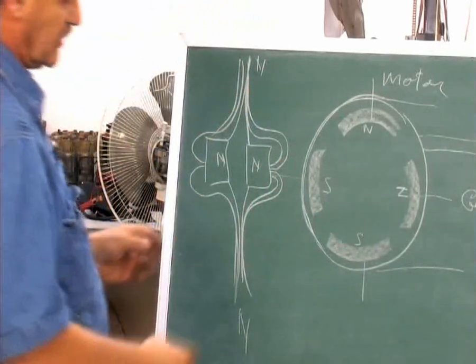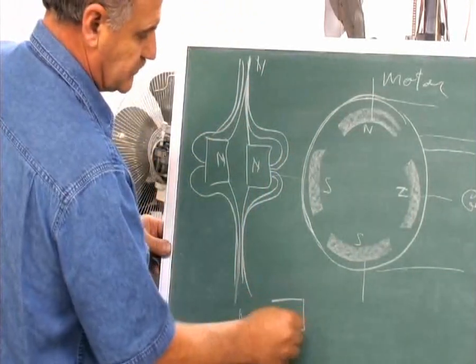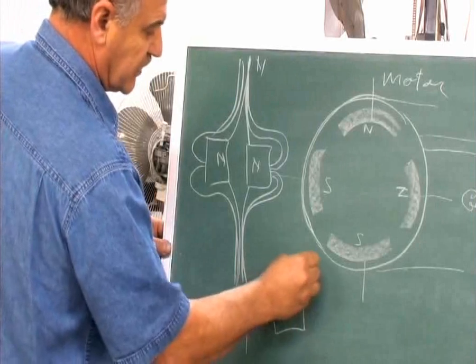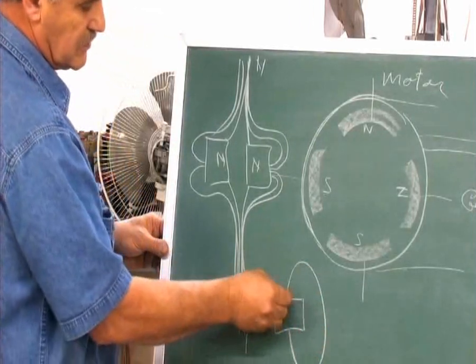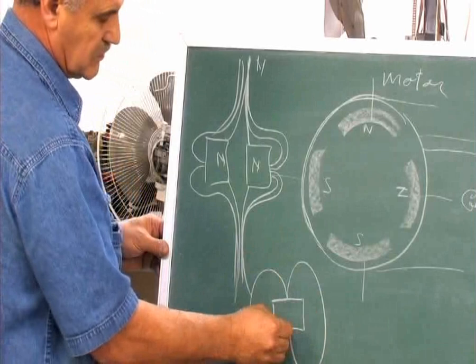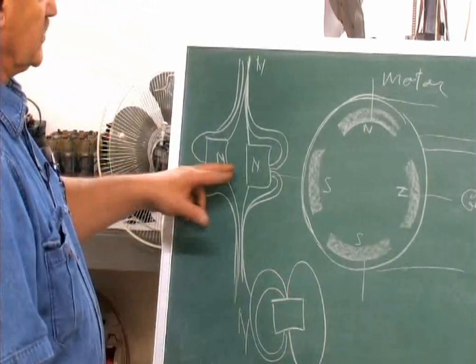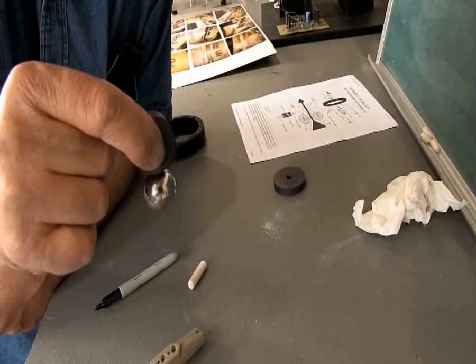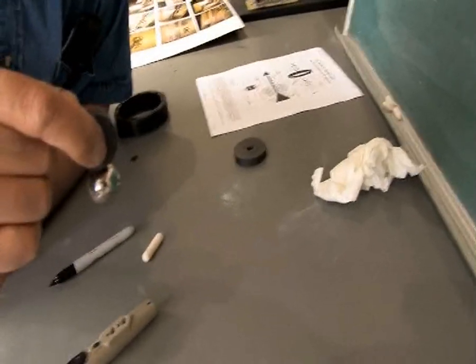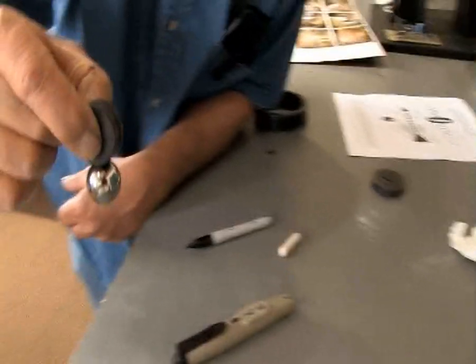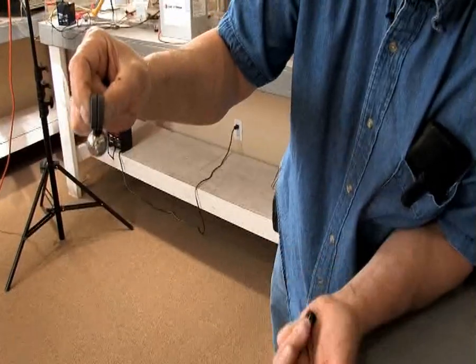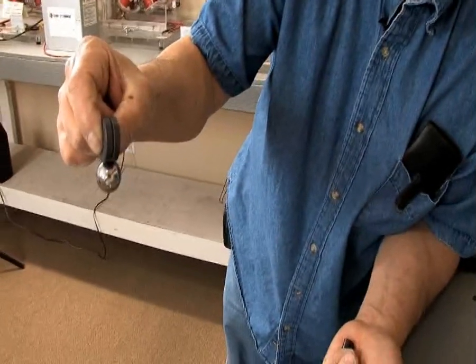because normally the North Pole, the magnetic field, goes like this. So I've always said that by doing this, by pushing the two North Poles together, that you're creating a scalar beam, a pinpoint scalar beam.